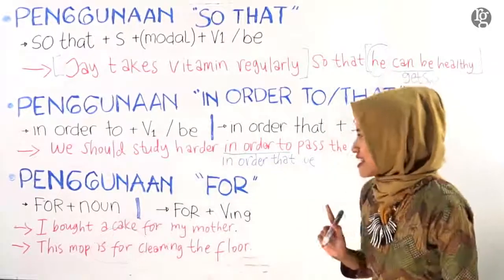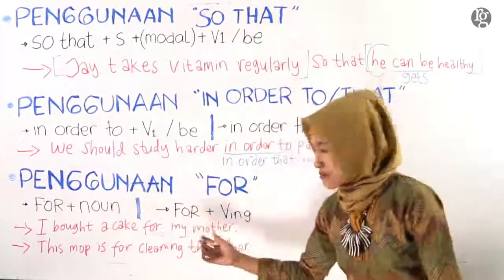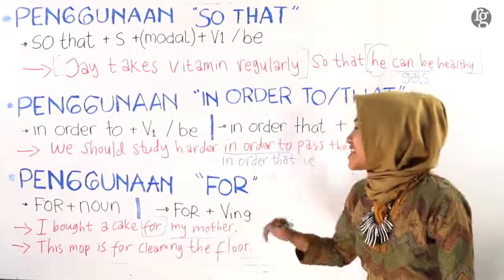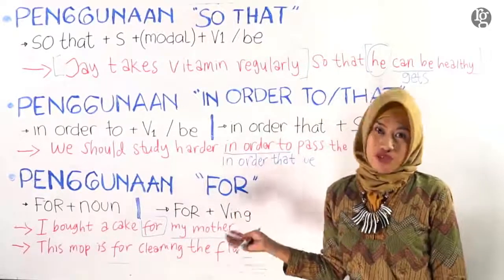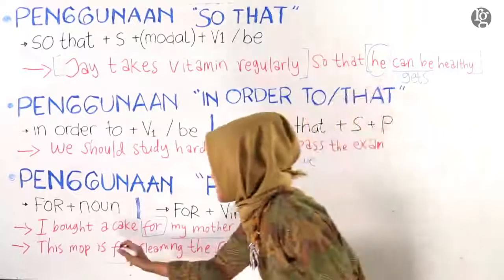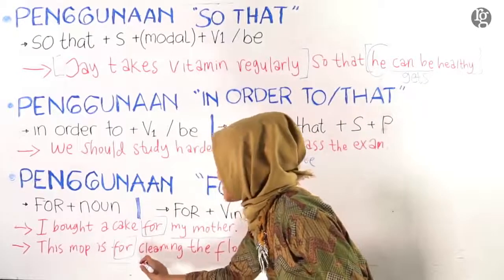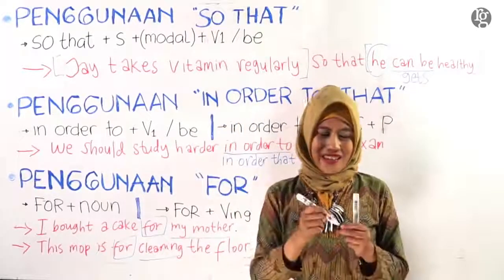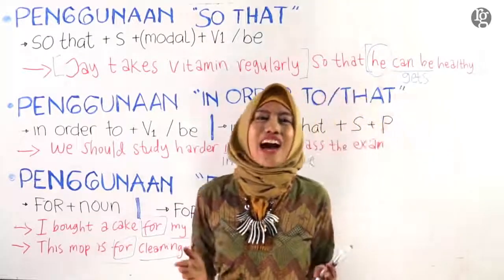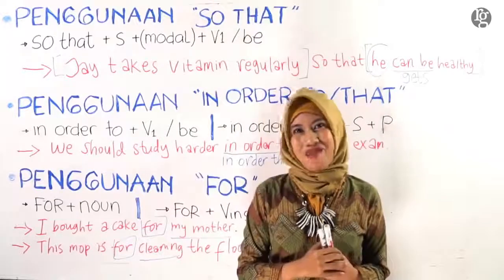Bisa kakak highlight sekali lagi: 'for' diikuti dengan kata benda. Kata bendanya di sini 'my mother'. Dan yang terakhir adalah 'for' diikuti kata kerja bentuk -ing, verb -ing atau istilahnya gerund, yaitu 'cleaning'. Ketiga bentuk ini bisa kalian gunakan untuk menyatakan maksud atau tujuan melakukan sesuatu.